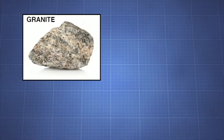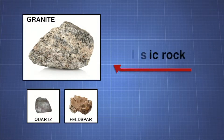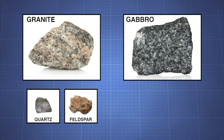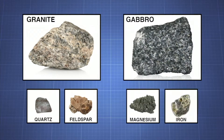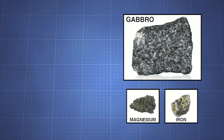Granite contains high concentrations of the minerals quartz and feldspar. These two minerals occur in high proportions in felsic rocks, such as granite. Gabbro is an intrusive rock rich in magnesium and iron. Mafic rocks, such as gabbro, are rich in these elements.